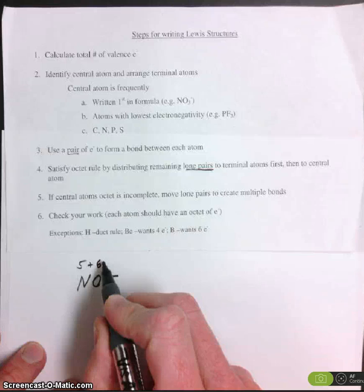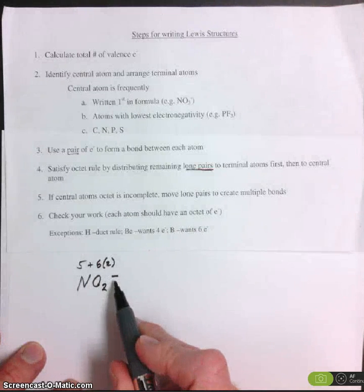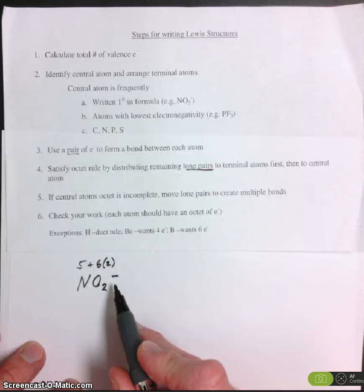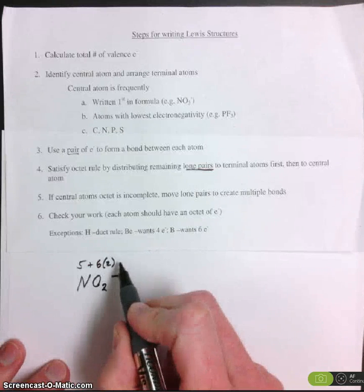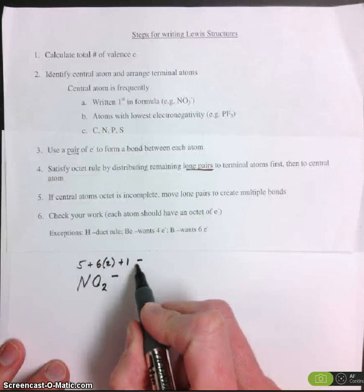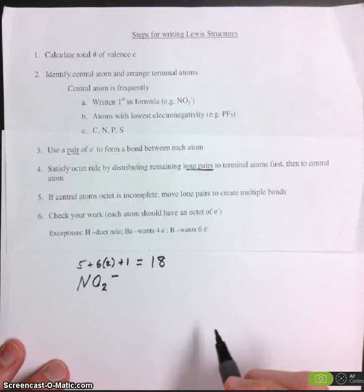Oxygen is in group 6, and we have 2 oxygens. Now, the fact that this has a charge of negative 1 means that it got this charge by gaining 1 electron. So we have to add 1 electron to it. So NO2 minus has a total of 18 electrons.